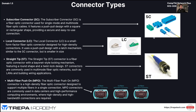Now let's go over connector types for fiber and Ethernet. The SC, or Subscriber Connector, is a fiber optic connector used for single-mode and multi-mode fiber optic cables. The LC, or Local Connector, is a small form factor fiber optic connector designed for high-density connections.